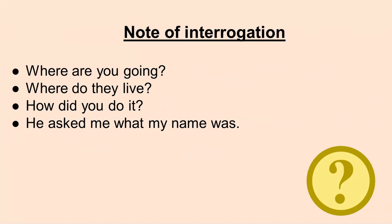Now come to the note of interrogation. Here are three interrogative sentences: 'Where are you going?' 'Where do you live?' 'How did you do it?' After each interrogative sentence, a note of interrogation has been used. Now look at this sentence: 'He asked me what my name was.' This is also a question in the sentence, but no note of interrogation is used because this is an indirect question. After a direct question we use a note of interrogation, but not after an indirect question.